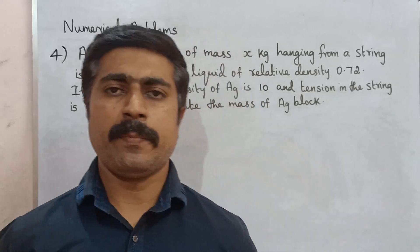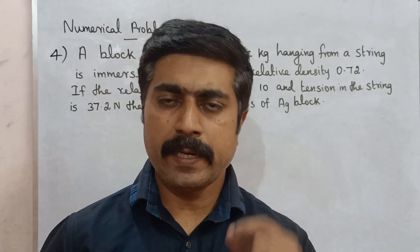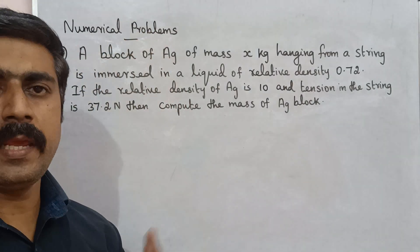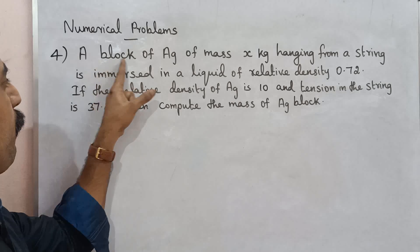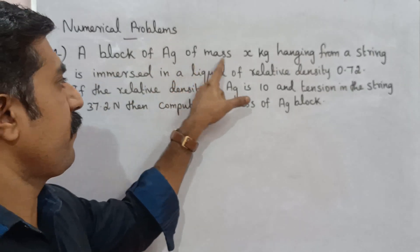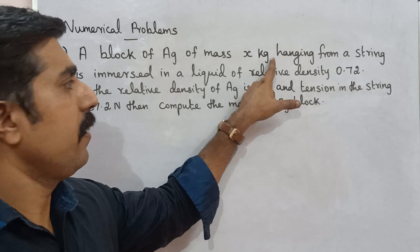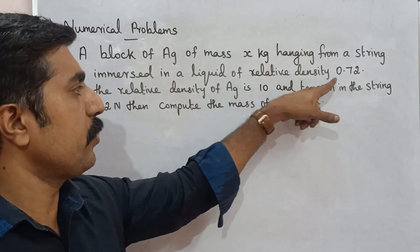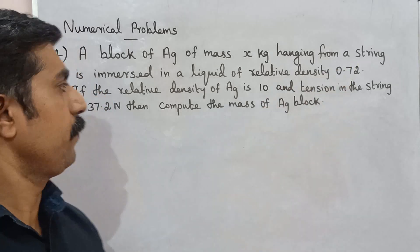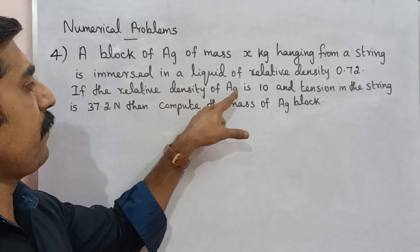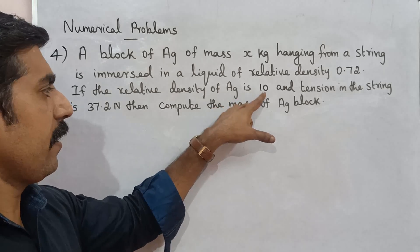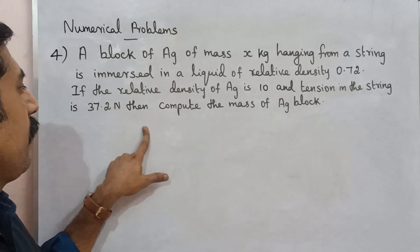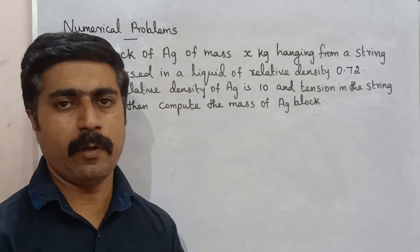Hi students, now we are going to see a simple problem in the book. Numerical problems, problem number 4. A block of silver of mass x kg hanging from a string is immersed in a liquid of relative density 0.72. If the relative density of silver is 10, and tension in the string is 37.2 Newton, then compute the mass of the silver block.